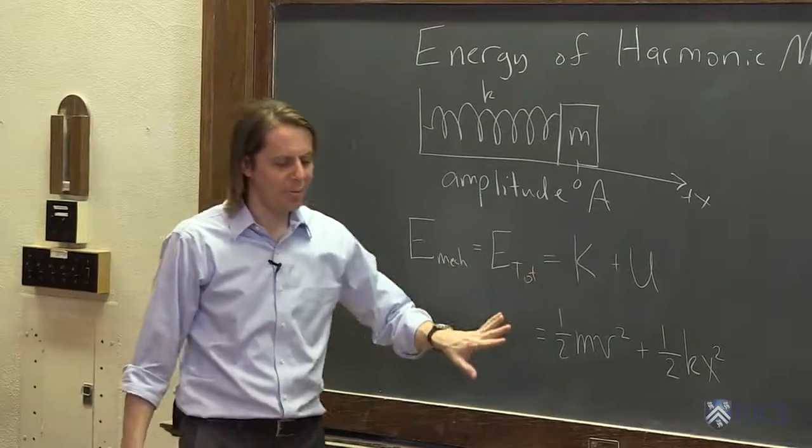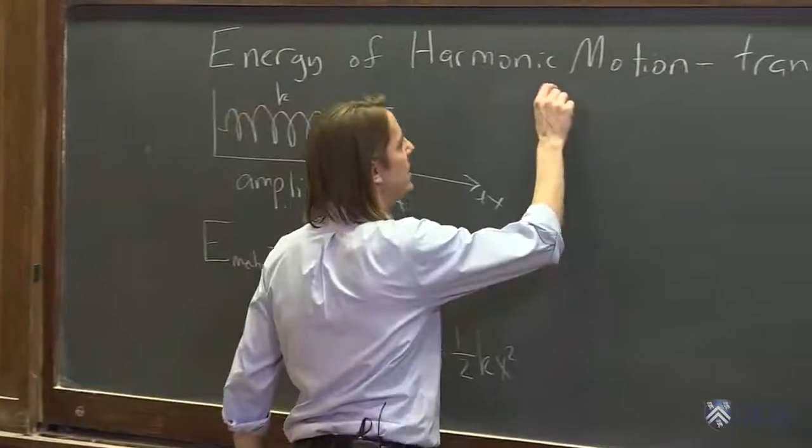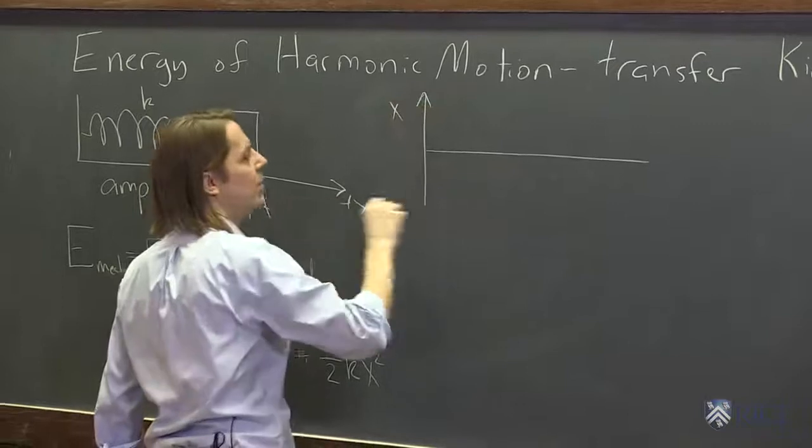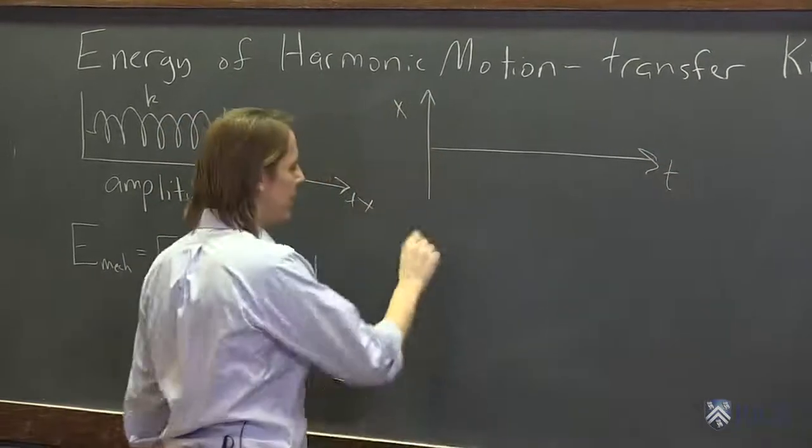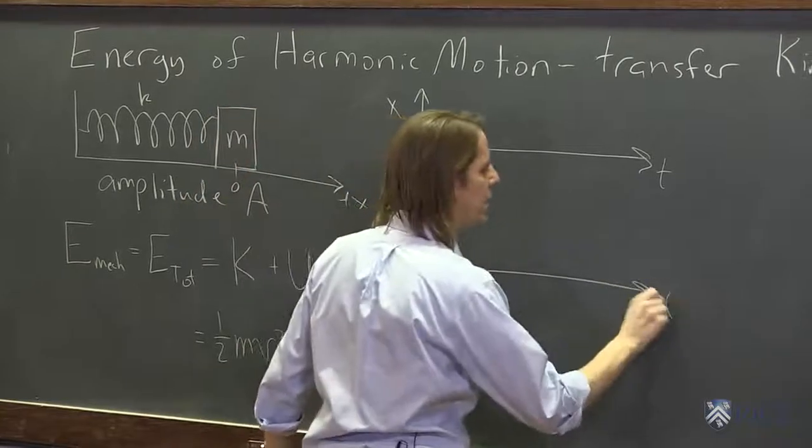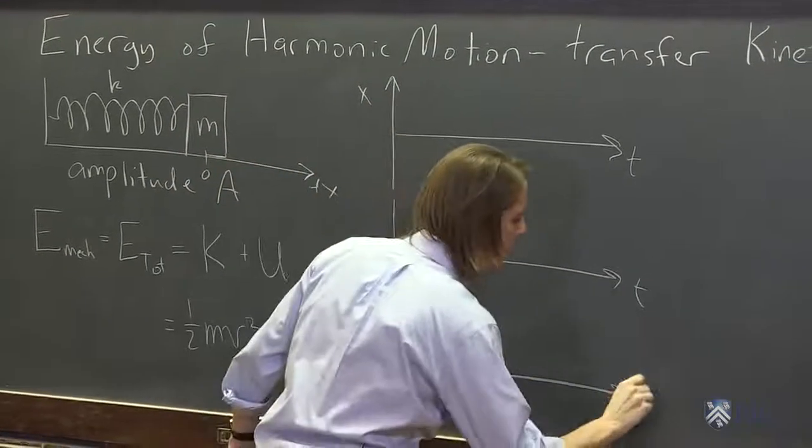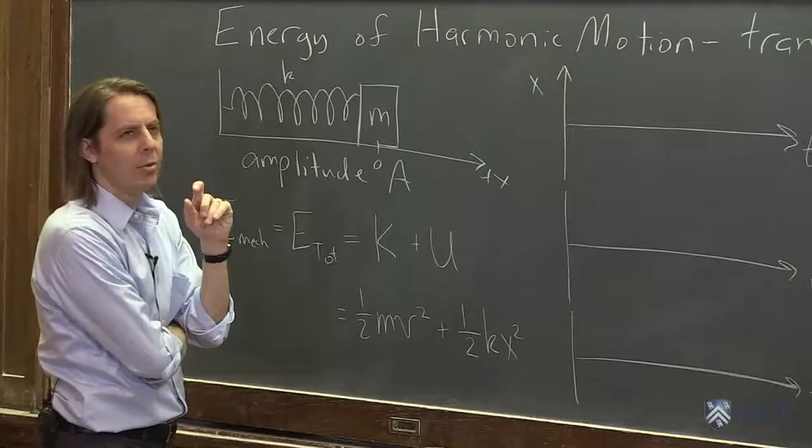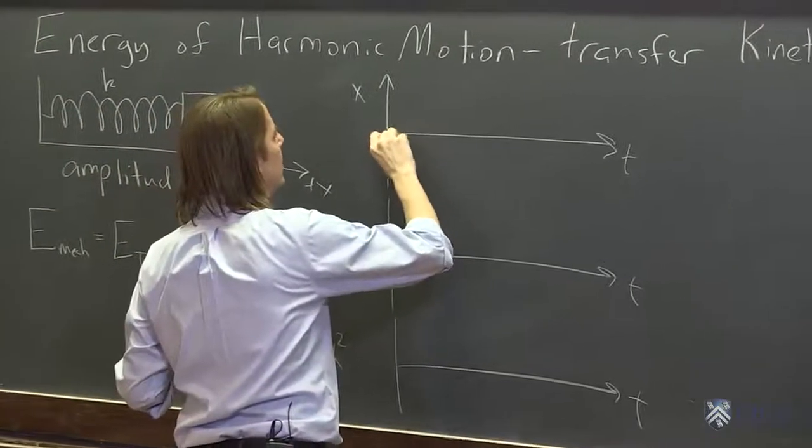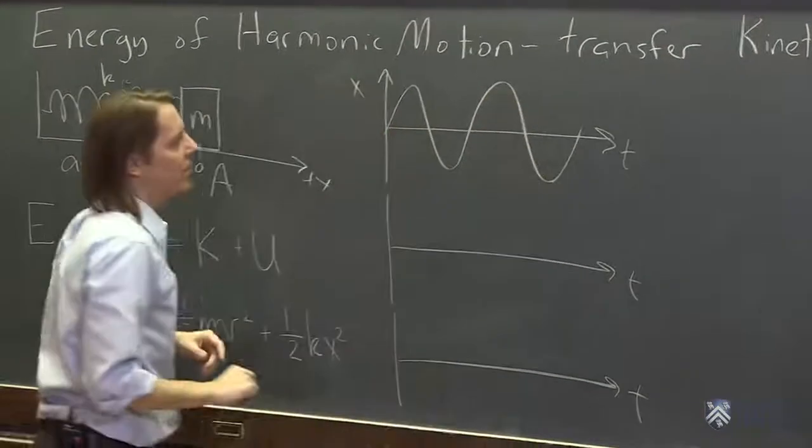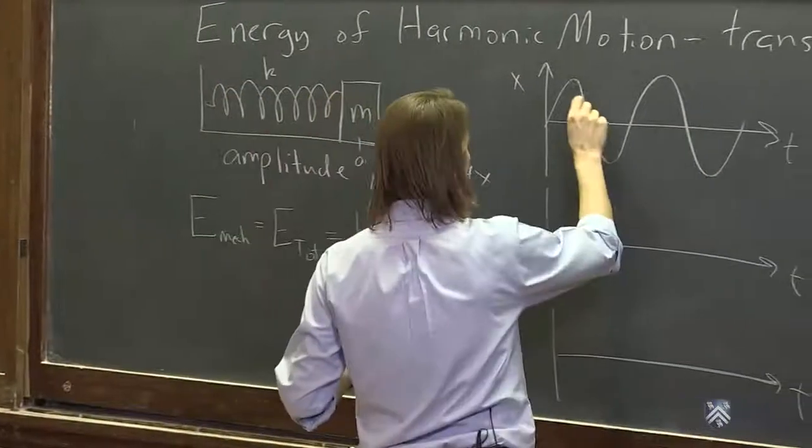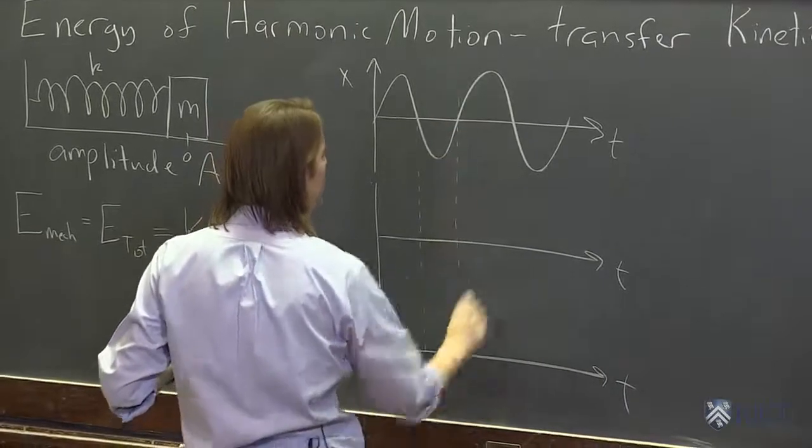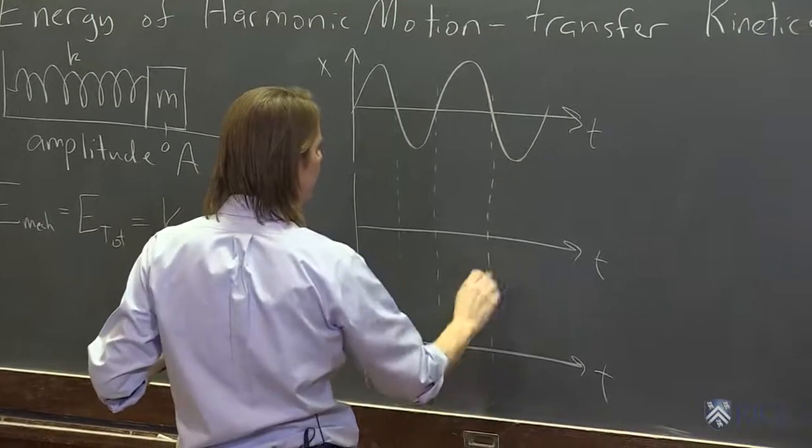If we now make plots of the motion and the energy, you see what happens. I'm going to plot the motion, so here is x as a function of time. Then we're going to plot the kinetic energy and the potential energy. The position we'll describe with a sine and have it go through a few cycles. I'll draw a little dotted line coming down to help us line up all the plots. That's where the zeros are for the position.